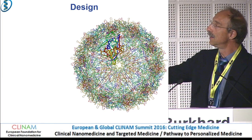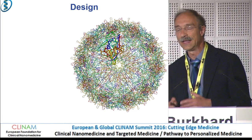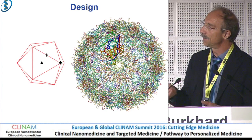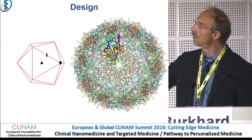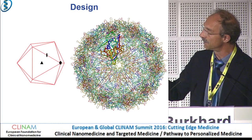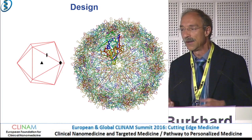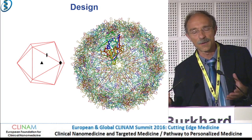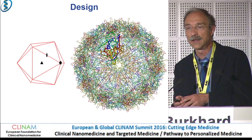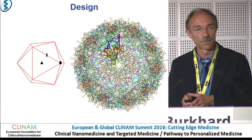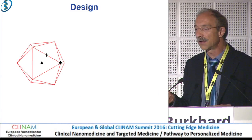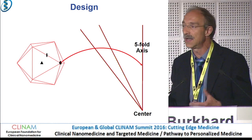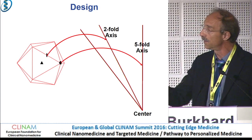This here is a small virus. It has icosahedral symmetry. Basically you have two-fold, three-fold, and five-fold symmetry elements here. We were wondering: can we mimic virus-like particles with just artificial proteins? Our background is from protein design — we were working with coiled coils.